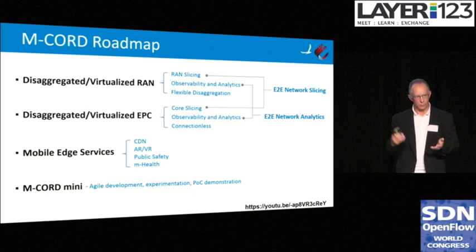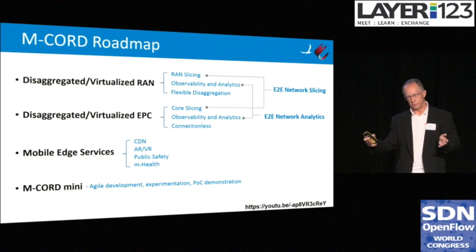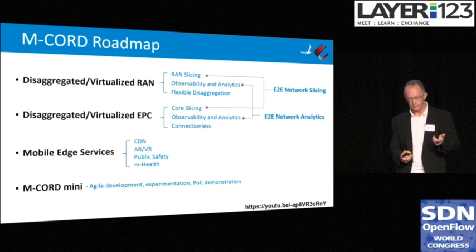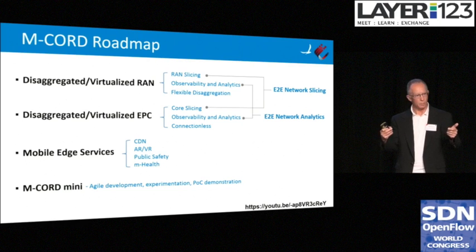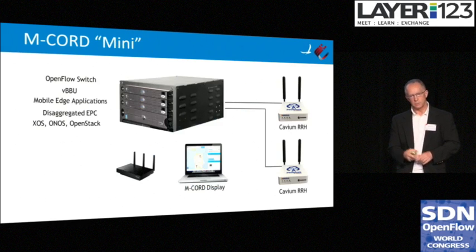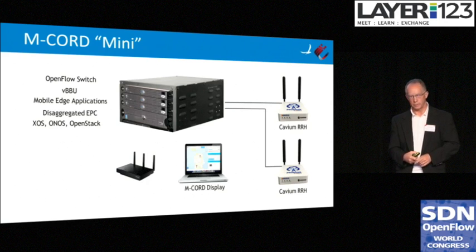With 5G coming and the types of things we want to do in 5G, CORD provides a perfect environment to try out many of these concepts. The roadmap is driven by SK Telecom working together with AT&T and Verizon and a number of other vendors. It includes showing soon: disaggregated and virtualized RAN, disaggregated and virtualized EPC, together with slicing in both the RAN and the EPC, analytics in both, and some very interesting mobile edge services around public safety and mobile health. We want to get mobile CORD into as many people's hands as we can — just like Canonical did with their orange box, we'd like a mini M-CORD. We're going to put ten of these together, get them in people's hands, and really drive applications and demonstrations forward.